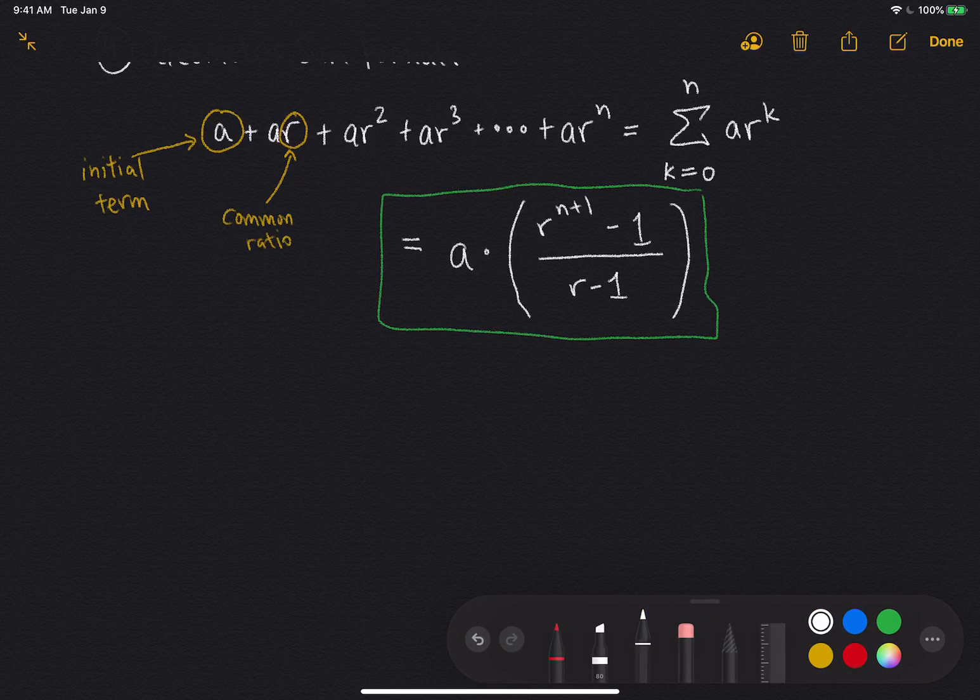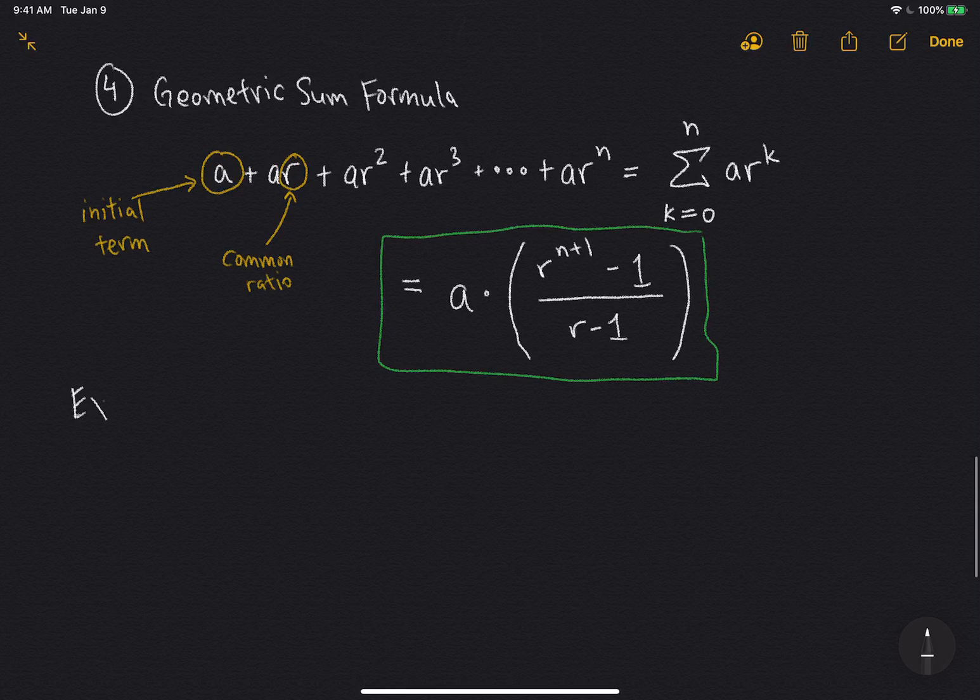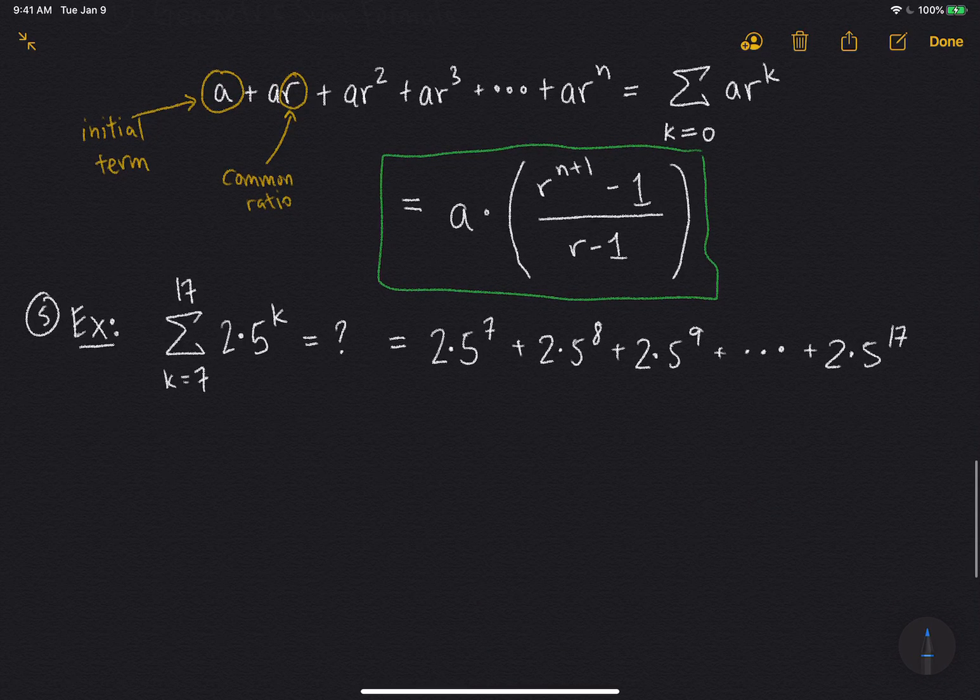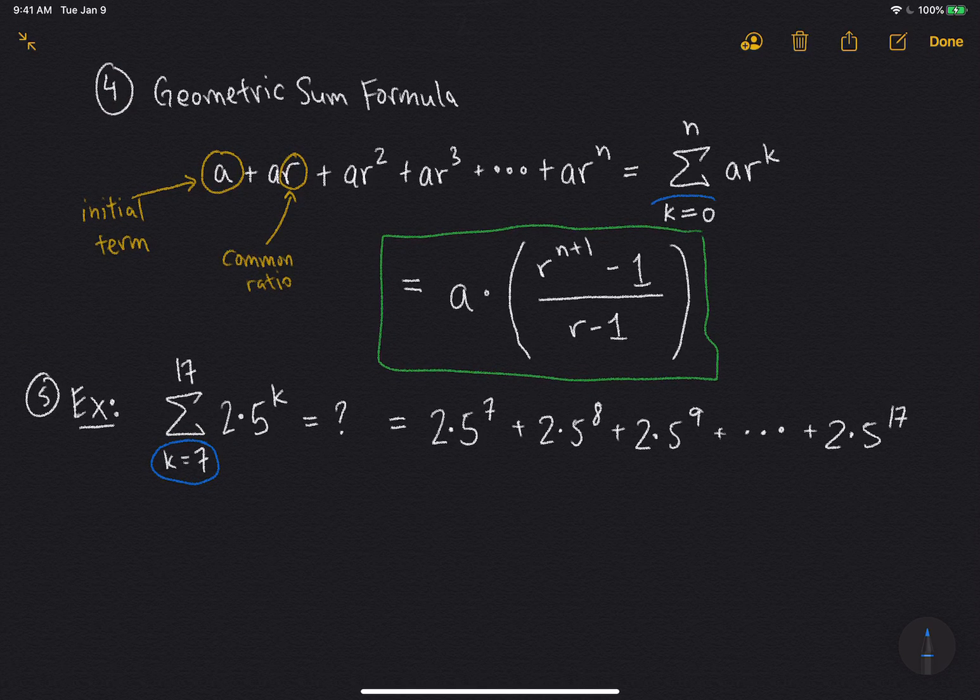So let me give you one last example about how you use this geometric sum formula. So my last example, let's say I want to evaluate something crazy, like the sum from k equals 7 up to 17 of 2 times 5 to the power k. Okay, so the thing is, I want to use the geometric sum formula. I want to use the geometric sum formula to evaluate this, but the thing is, it starts off with k equals 7, whereas the geometric sum formula starts with k equals 0.